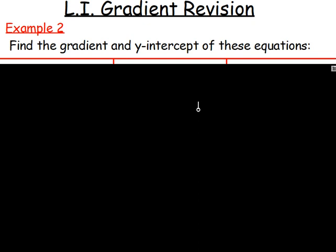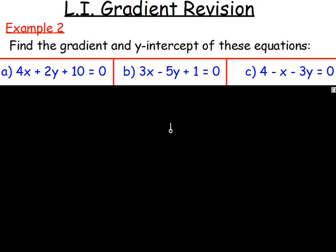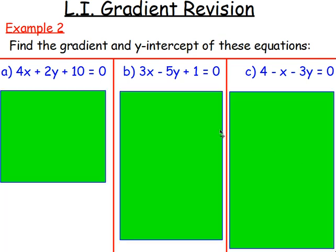Example 2: find the gradient and y-intercept of these equations — all written in the form ax plus by plus c equals 0. To get the gradient and the y-intercept, your equation has to be in the form y equals mx plus c. So with the first one, I want y just on its own with everything else on the other side. Get rid of the 4x and the 10 — move the 4x over so it becomes minus 4x, and move the 10 over so it's minus 10.